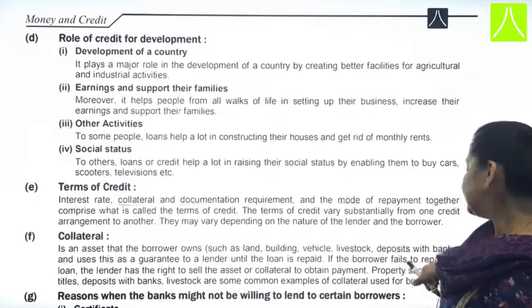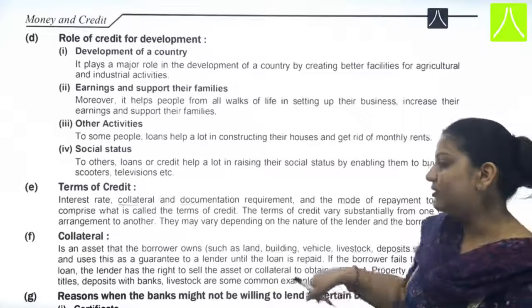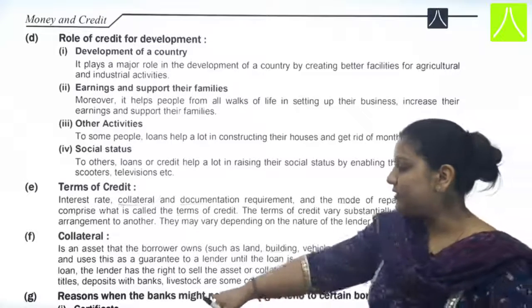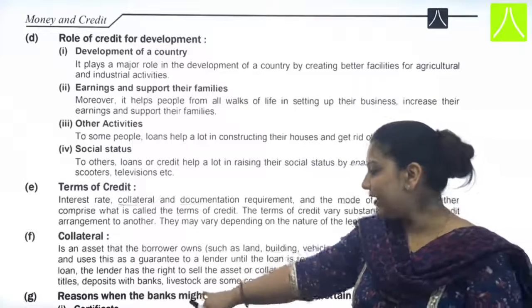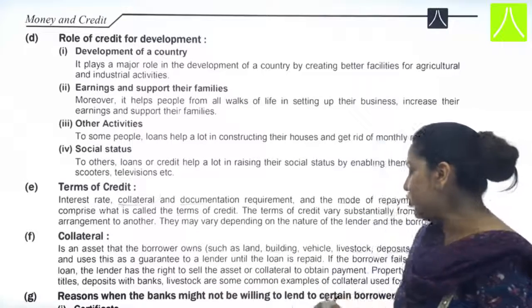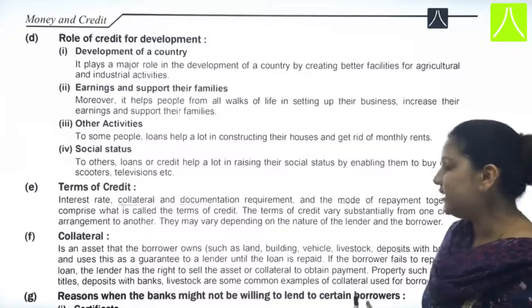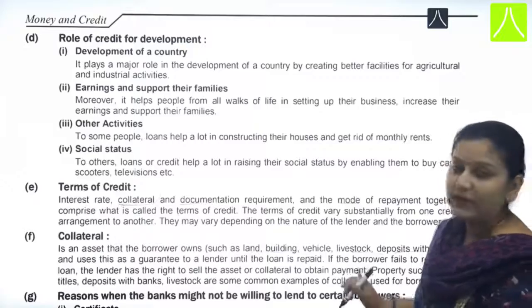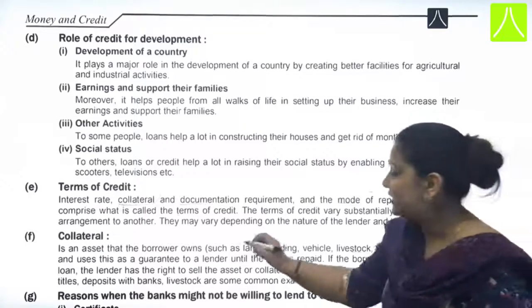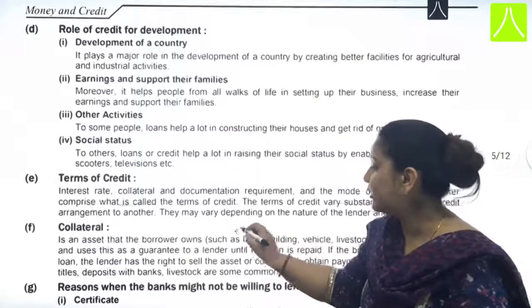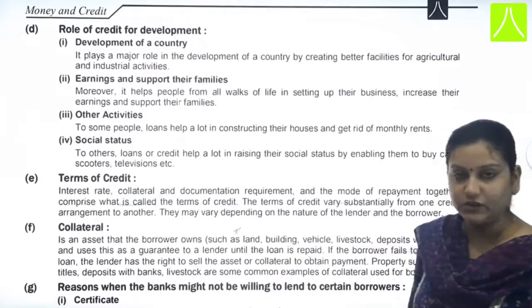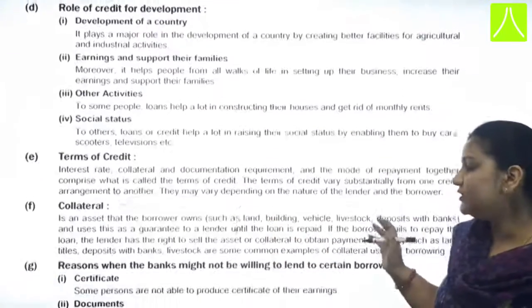Property such as land titles, deposits with banks, and livestock are common examples that are used as collateral. This is an important definition to remember.